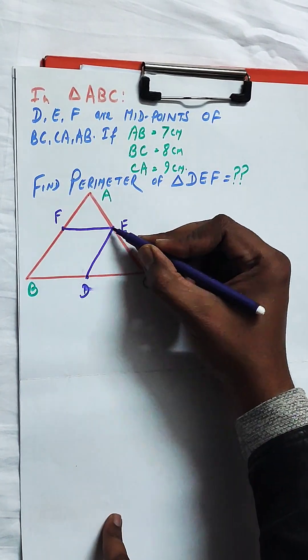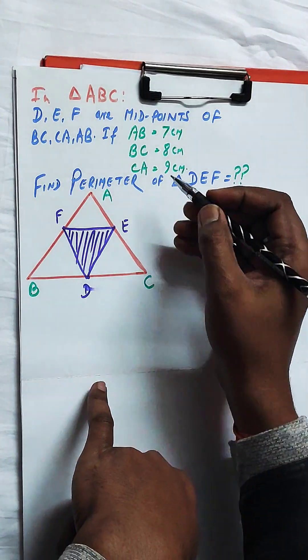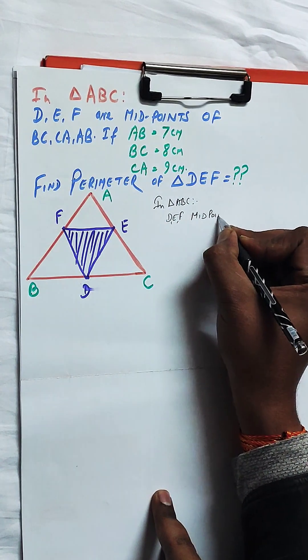So, we are knowing the theorem: the line segment joining the midpoints of any two sides of a triangle is parallel to the third side and equal to half of it.